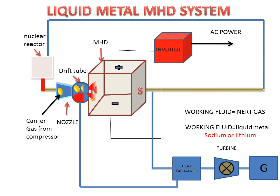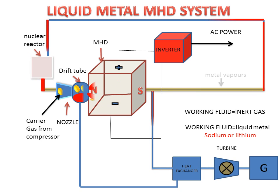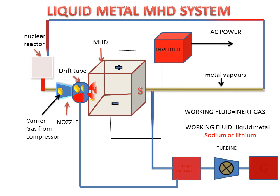The exhaust gas will go for further use and the metal vapor will go back to the nuclear reactor. This cycle will be repeated again and again. The heat is used by the heat exchanger, which is further used for rotating a turbine and converting mechanical energy into electrical energy with the help of a generator.